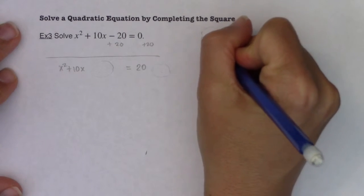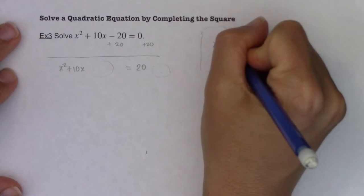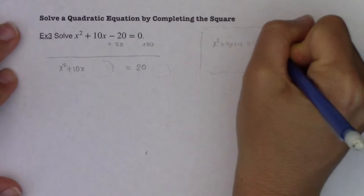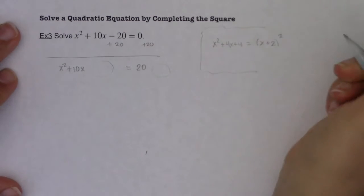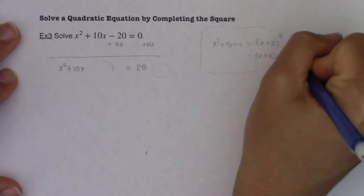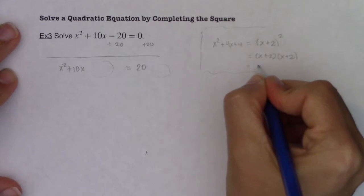Let's say I had something like x squared plus 4x plus 4. I could rewrite that as x plus 2 quantity squared. And if you don't believe me, think about foiling this out, x plus 2, x plus 2, or double distributing. But I'll foil it.